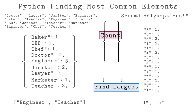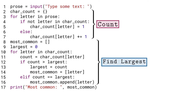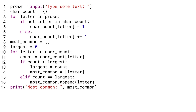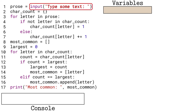Let's visualize the Python code to find the most common letter in some text, following those two steps. As we visualize this code, the variables will be seen to the right of the code, and the input/output will be in the console beneath the code. The input function shows a prompt to the user and waits for them to type in some text and hit enter. Suppose they type in 'pepperoni pizza'.